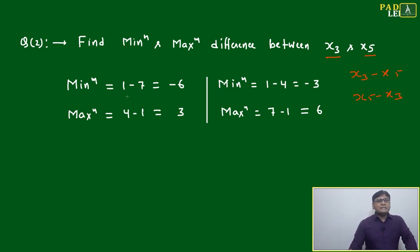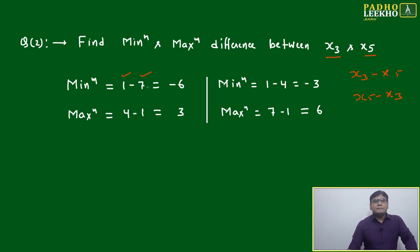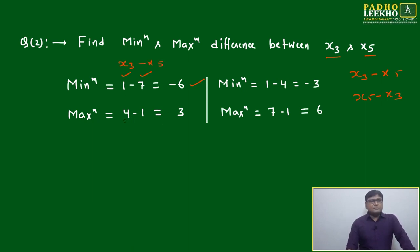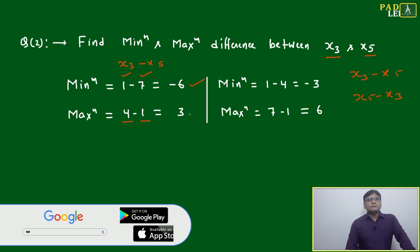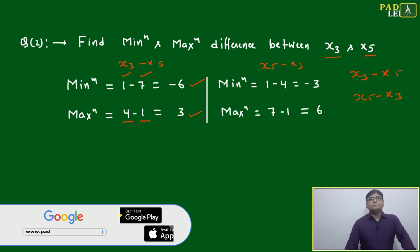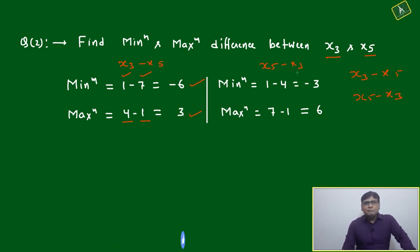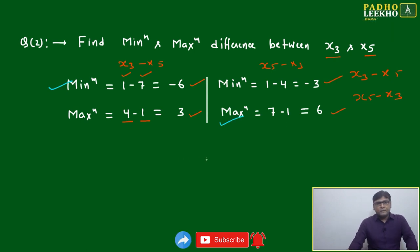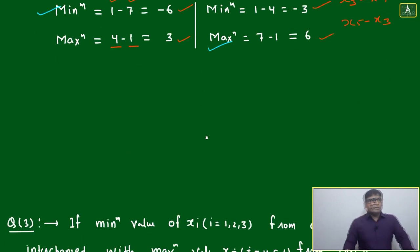For the minimum: x3 can be 1 (minimum from column one) and x5 can be 7 (maximum from column two), giving 1 minus 7 = minus 6. For the maximum: x3 maximum is 4, x5 minimum is 1 — but considering x5 minus x3, x5 max is 7 and x3 min is 1, giving plus 6. So the minimum difference is minus 6 and the maximum difference is plus 6.